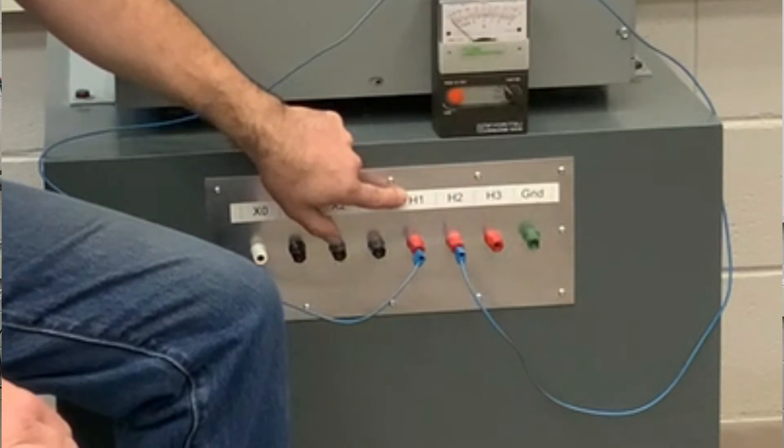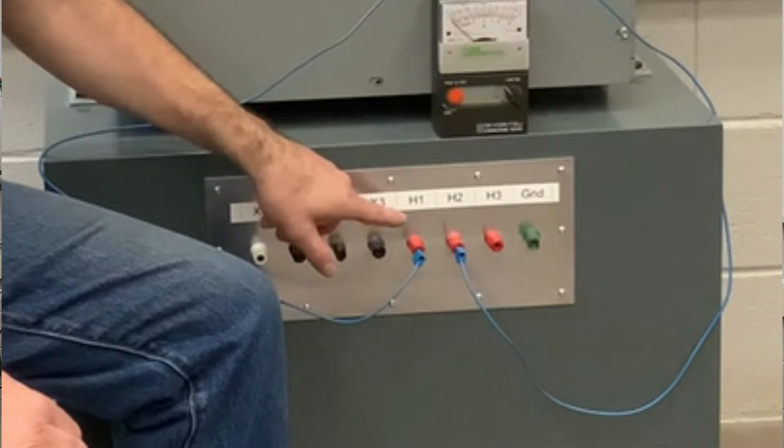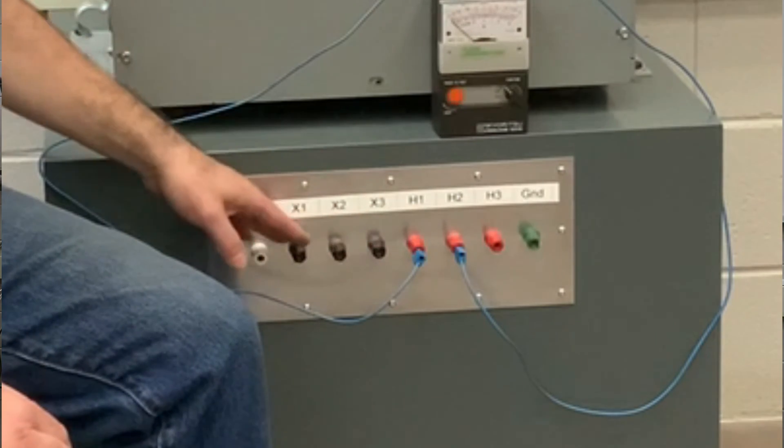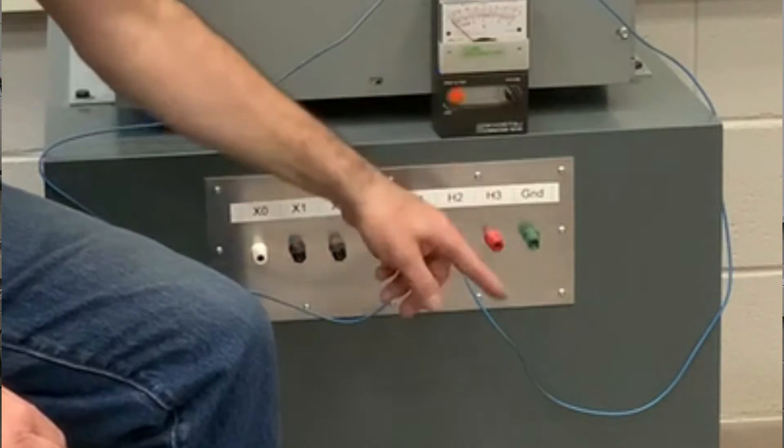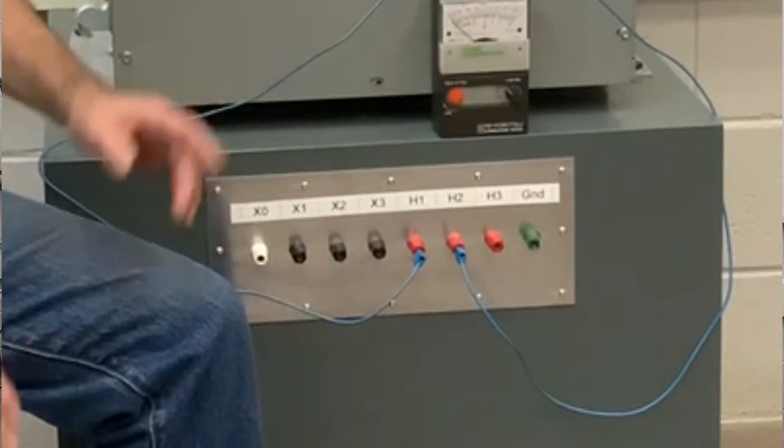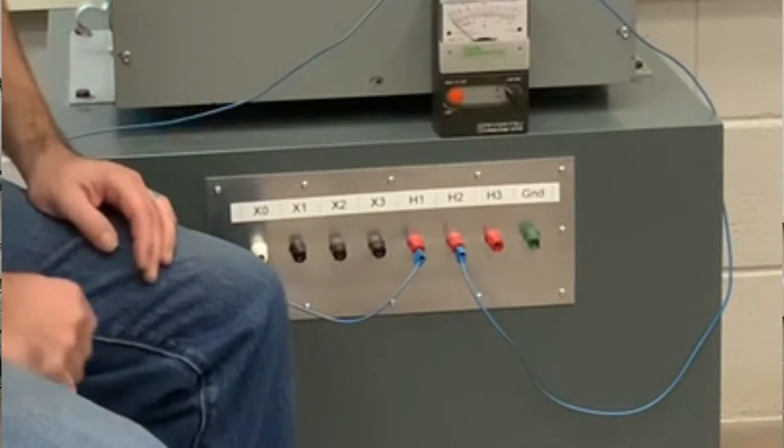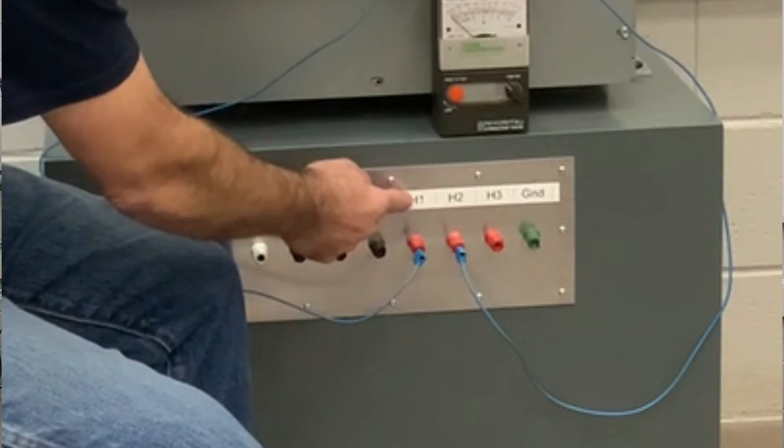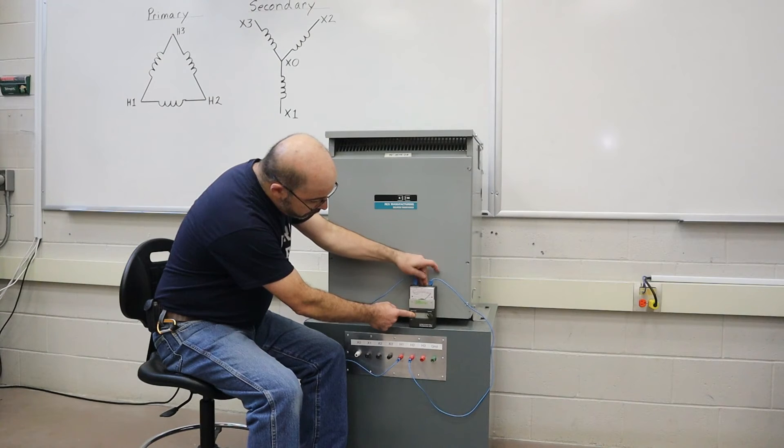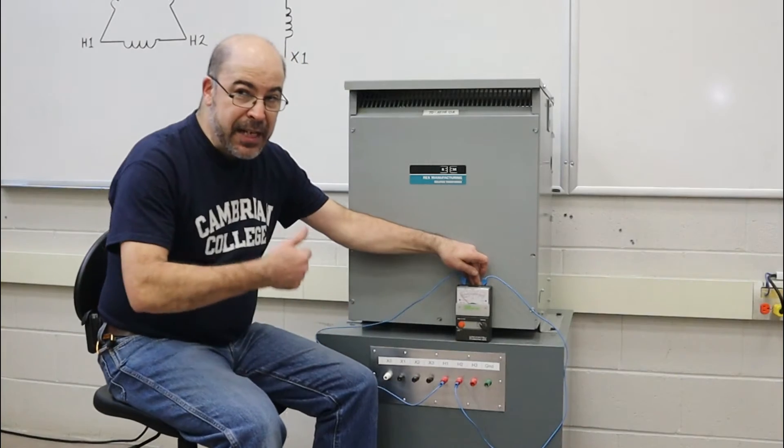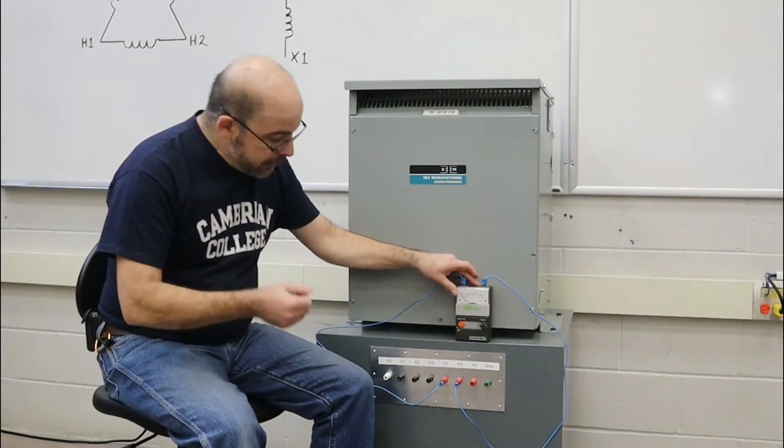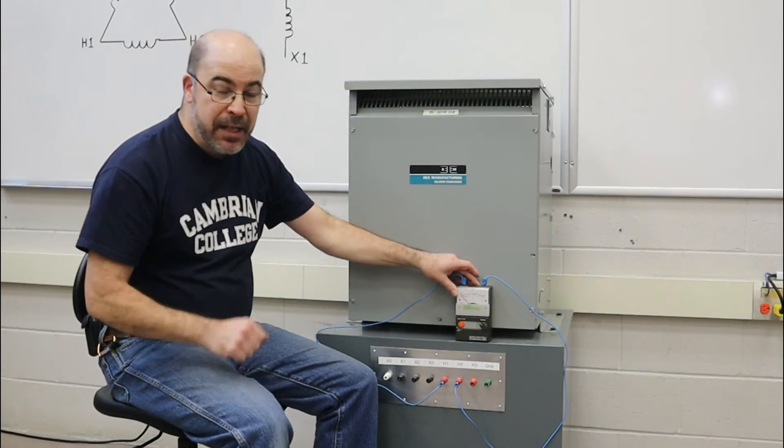So primary is indicated with the red test leads, secondary is black, obviously my ground is green and X0 is white or otherwise known as your identified conductor. So here we go. I'm going to be testing H1 to H2 of the primary windings. And you see I've got continuity. So the winding is good and that I've got no opens and that the insulation doesn't seem to be damaged.